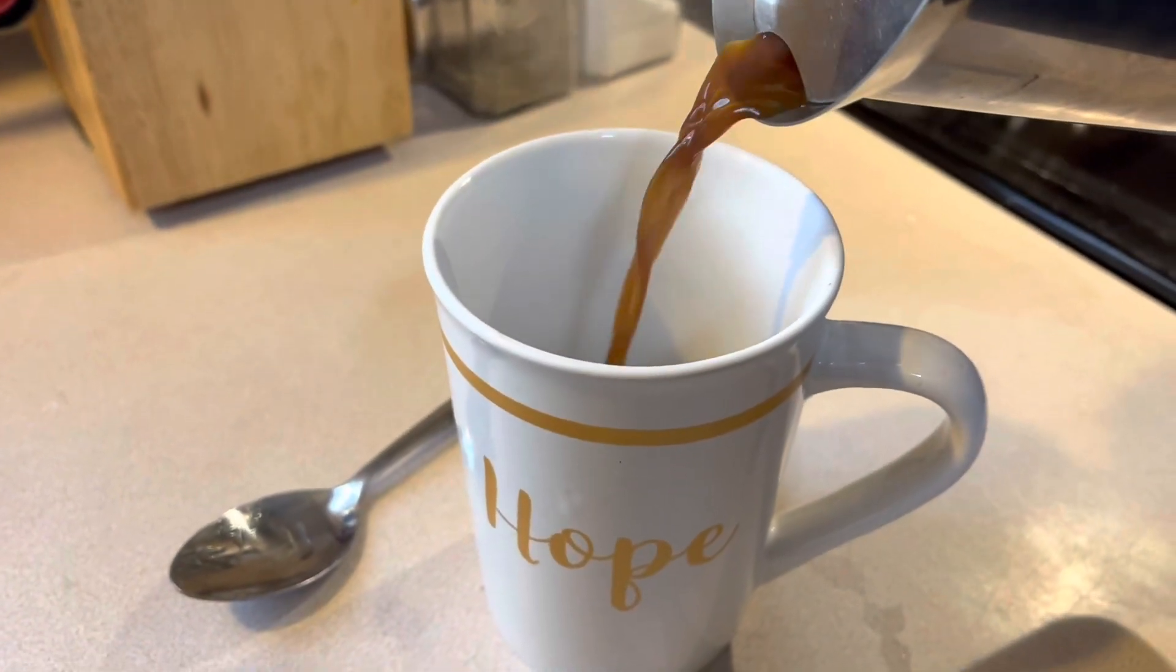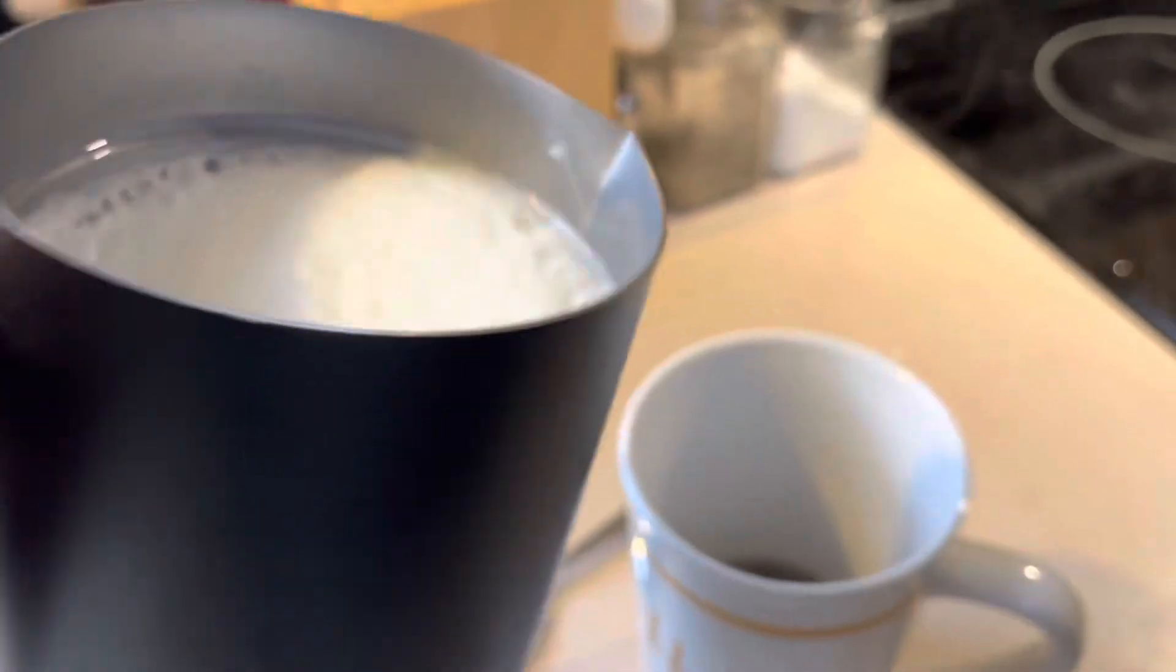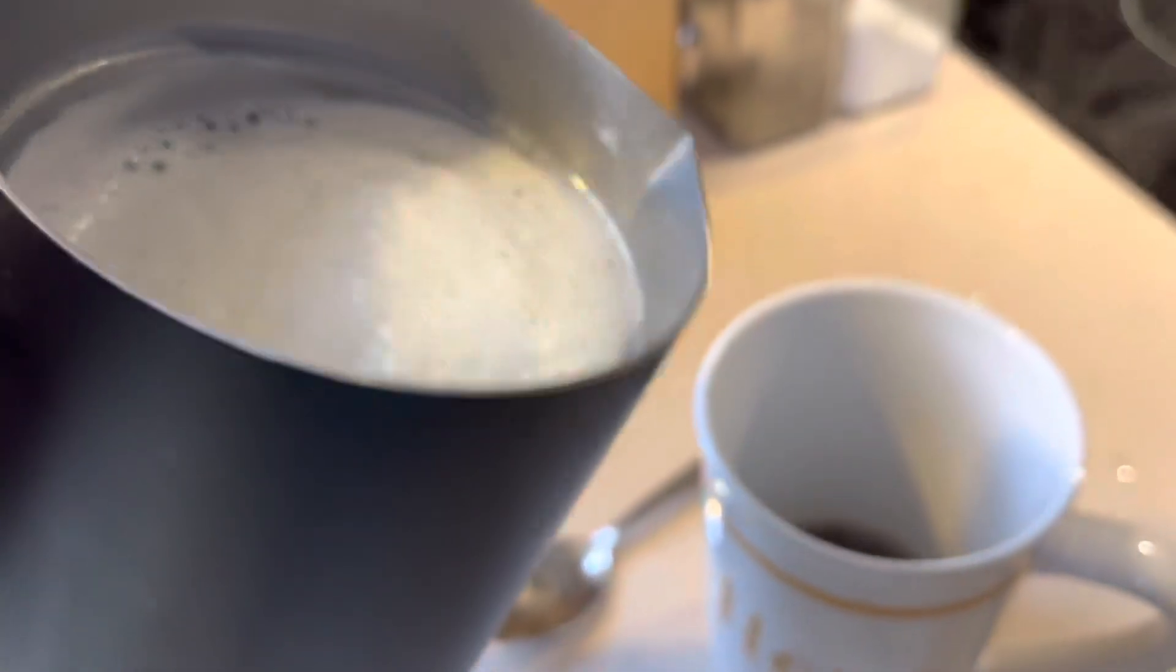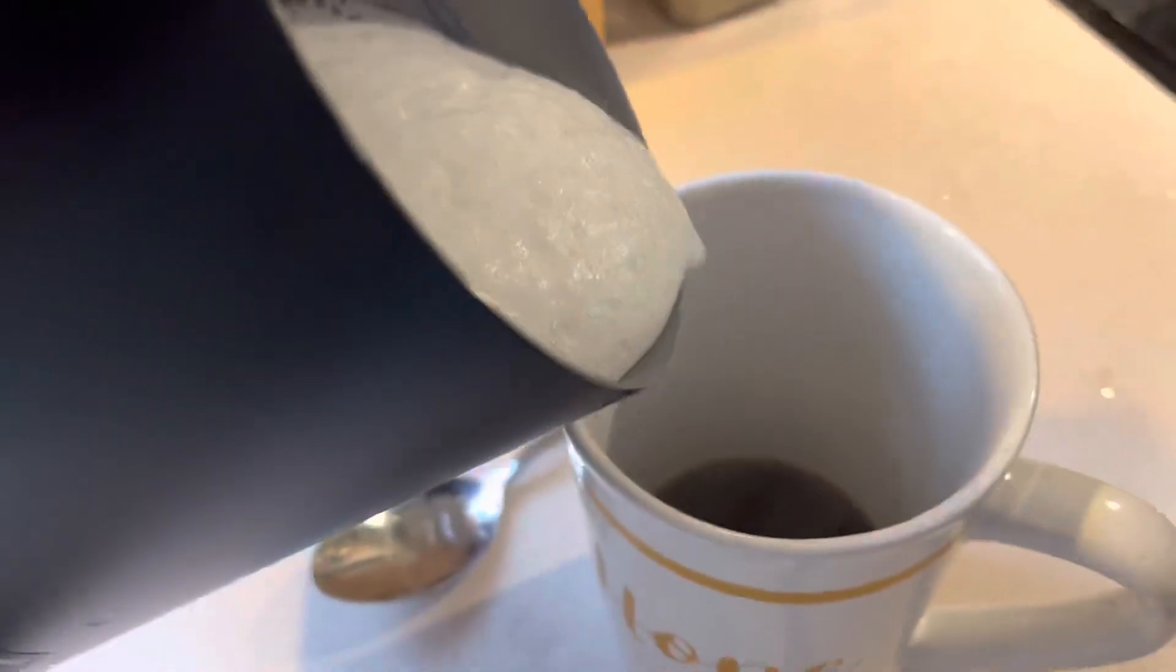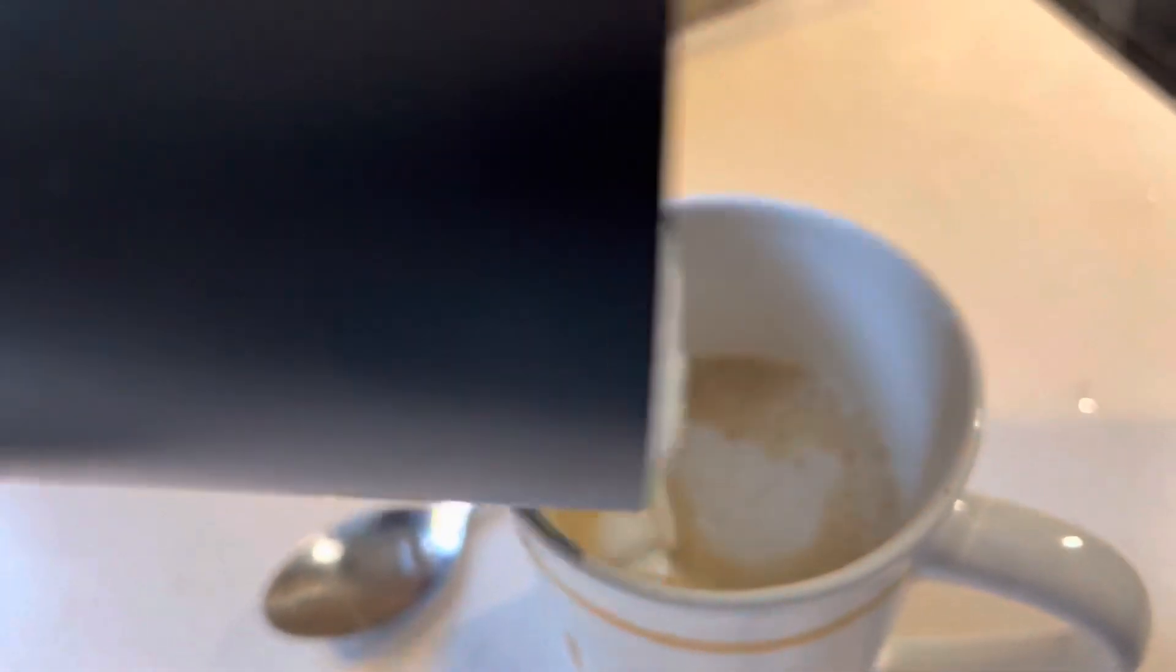Once that's done, pour in your brewed coffee and swirl around the milk. My brother taught me that tip. He was a barista for a couple of years. Then pour in your milk. Make sure you get that nice frothing in there.